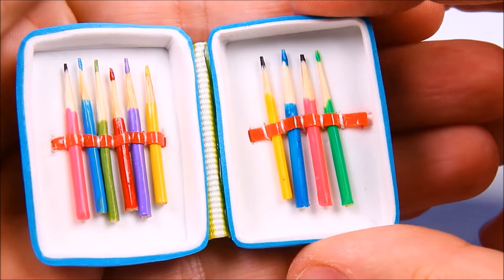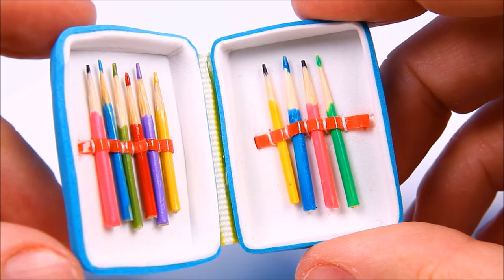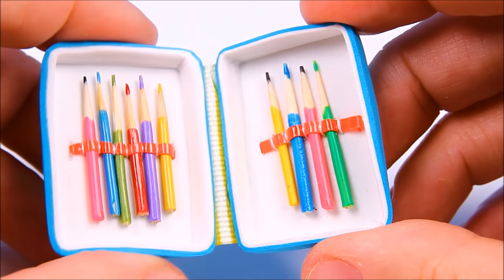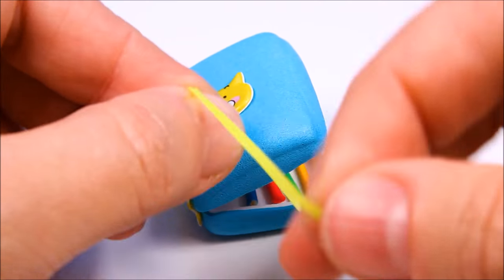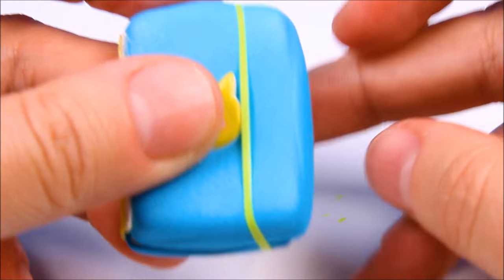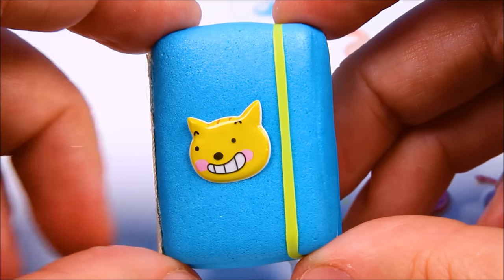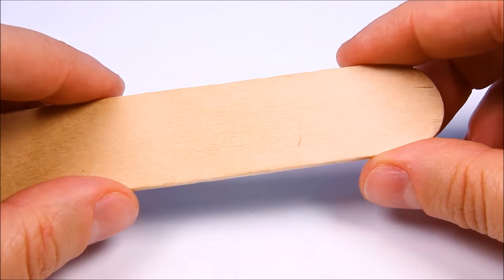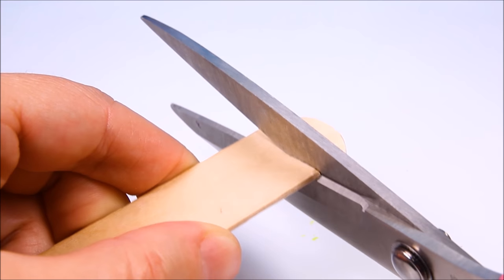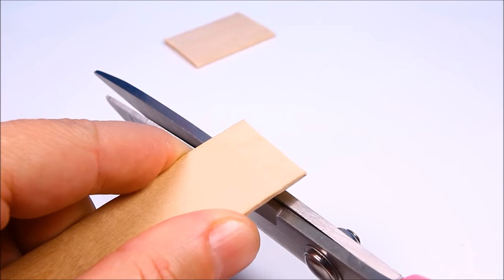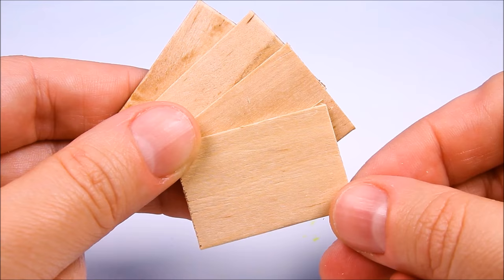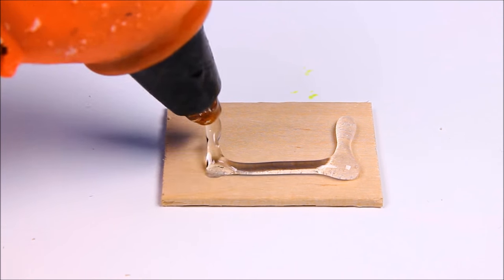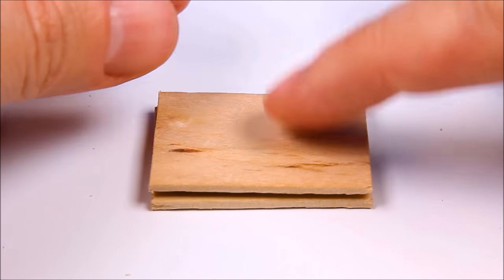In this tutorial I'll be making a tiny pencil case. I took a jumbo popsicle stick and cut out four pieces. Using hot glue I glued all the four pieces together forming a brick.